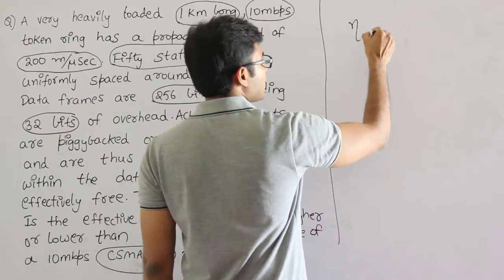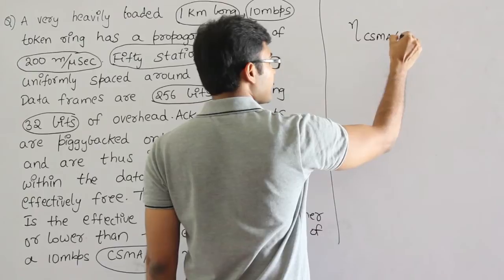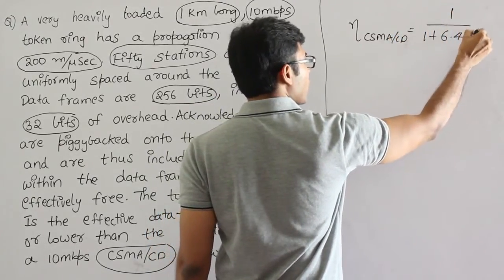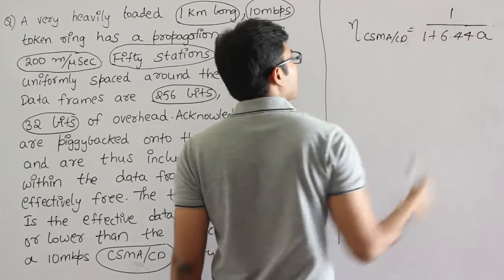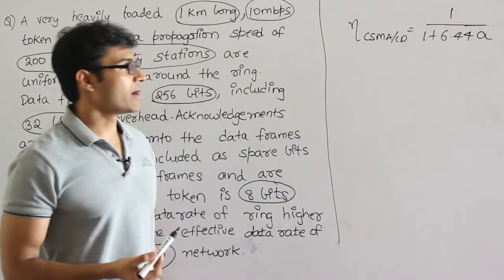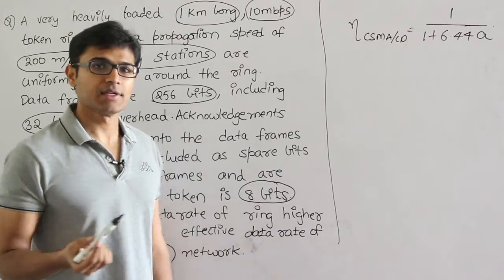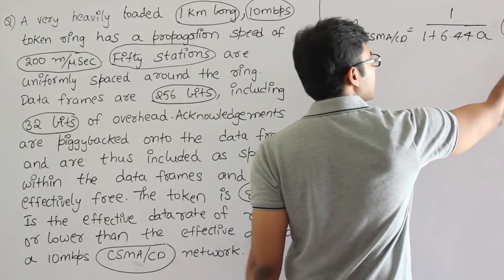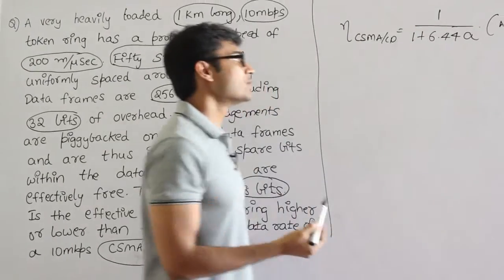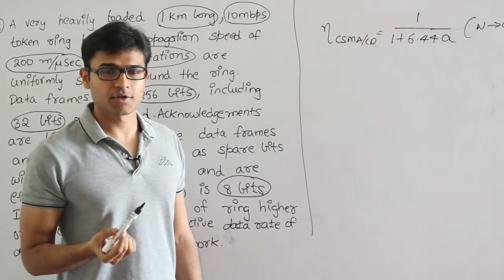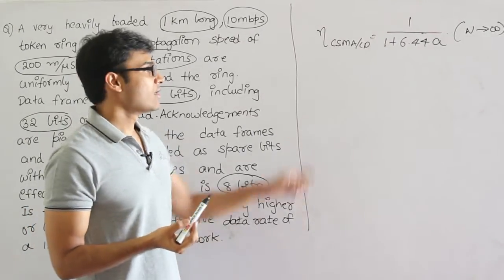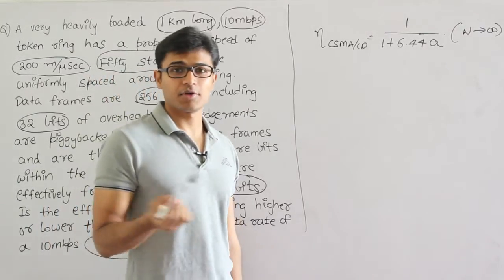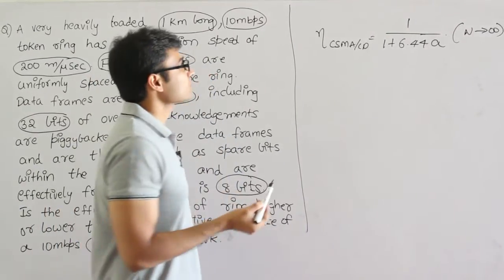Efficiency of CSMA/CD or Ethernet is 1 upon 1 plus 6.44A. But one thing you should keep in mind is when I was deriving this efficiency of CSMA/CD, I assumed that number of stations N is close to infinity. If you remember the derivation of the efficiency of CSMA/CD, I assumed that the efficiency is calculated based on the assumption that number of stations are infinity.